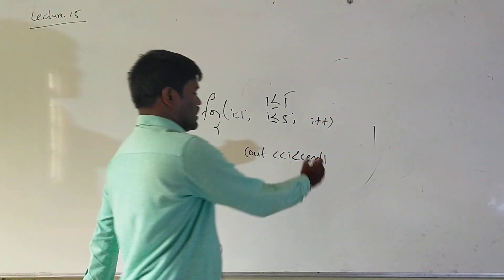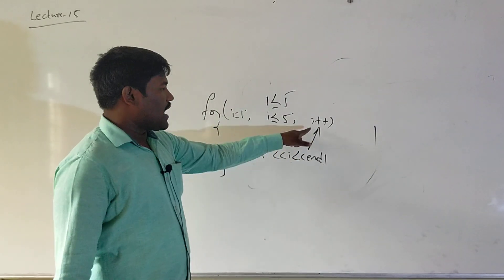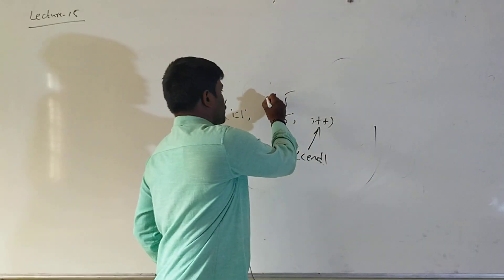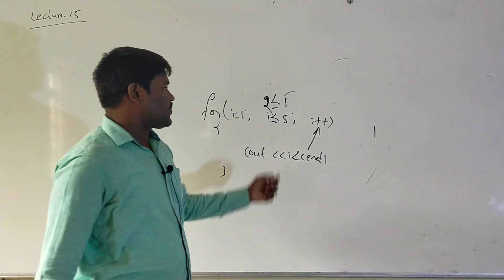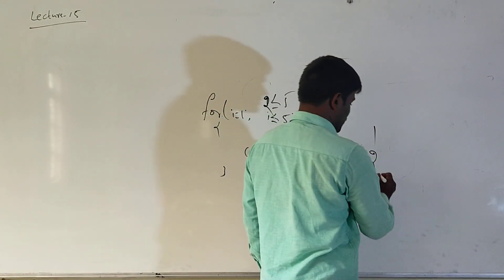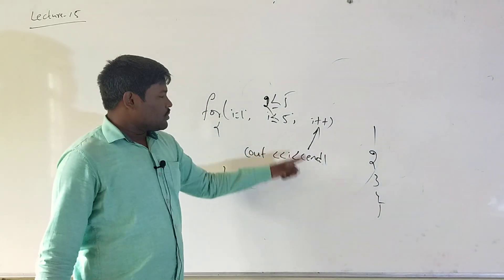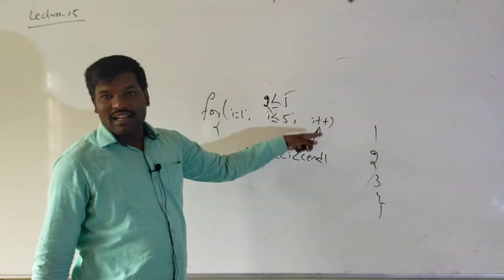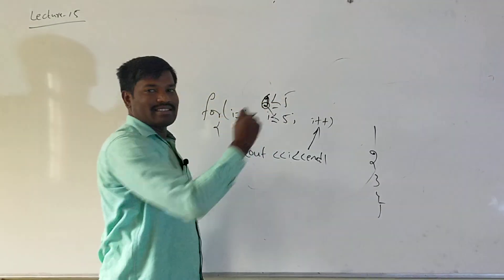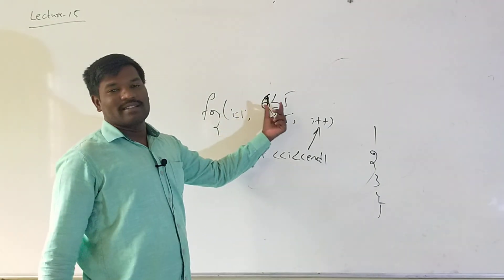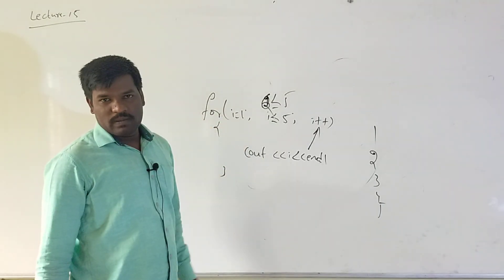After printing 1, i is automatically incremented, so i becomes 2. Again it checks the condition: 2 is less than or equal to 5 — condition is true again. This continues for 3, 4, and 5. Once i becomes 6, 6 is less than or equal to 5 is false, so the condition becomes false and the loop terminates. This is how the for loop works.